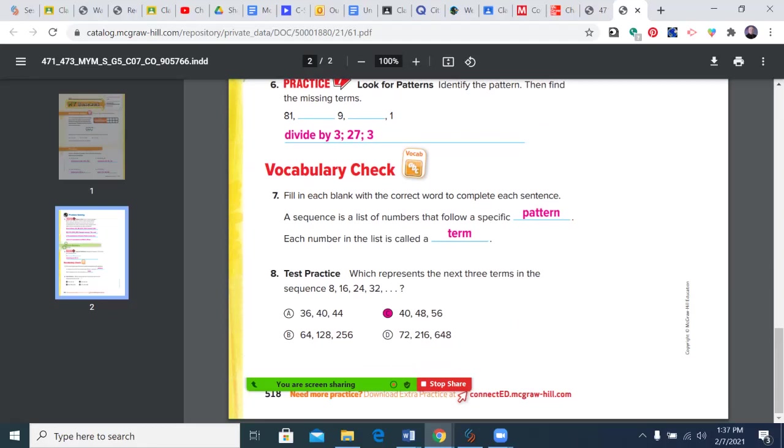A sequence is a list of numbers that follow a specific pattern, and each number in the list is called a term. Over here we were adding eight, so our next ones are 40, 48, and 56.